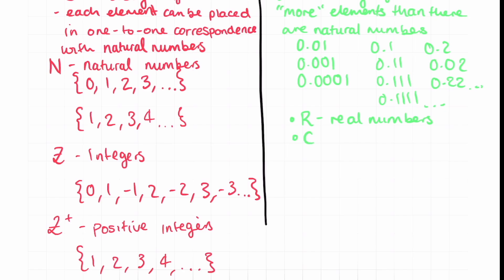Another example of an uncountably infinite set is the complex numbers, which are uncountably infinite because they include all possible combinations of real and imaginary parts. Don't worry if you don't understand complex numbers — it's just an example of an uncountably infinite set.